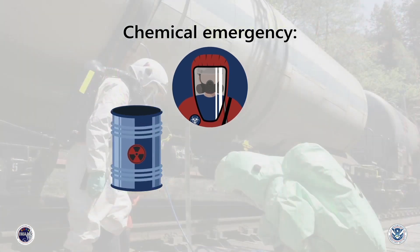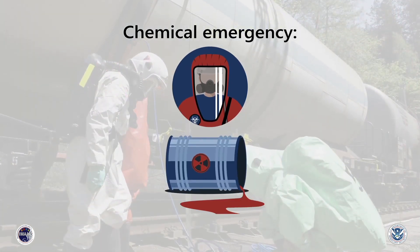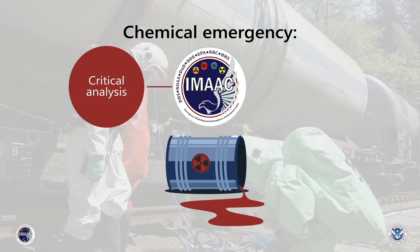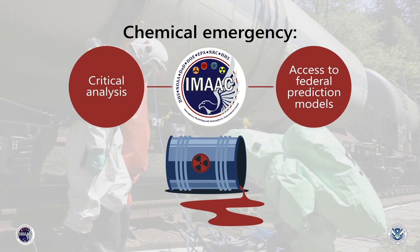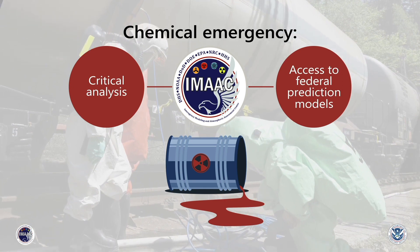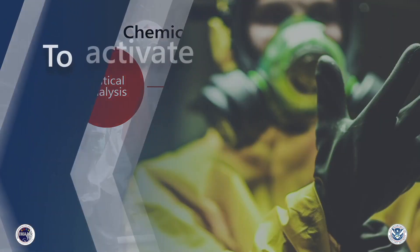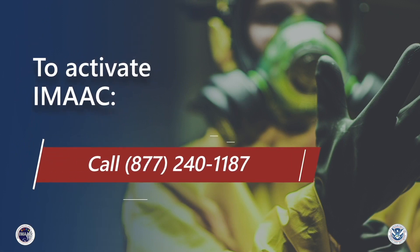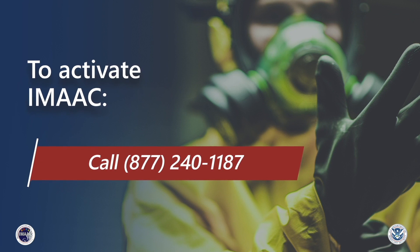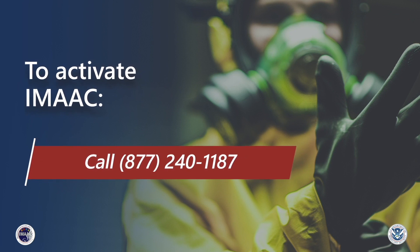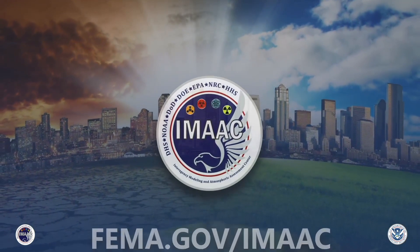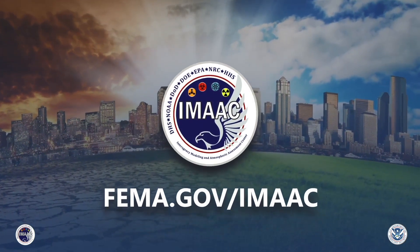If a chemical incident occurs in your jurisdiction that threatens public health and safety, activate iMac for critical analysis of the hazard and access to the federal position on hazard prediction models to help make life-saving decisions. To activate iMac, call 877-240-1187 and be prepared to provide as much incident information as available. For more information about iMac, please visit fema.gov/iMac.